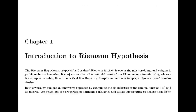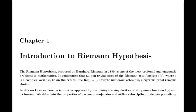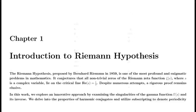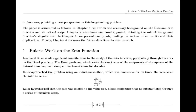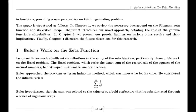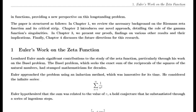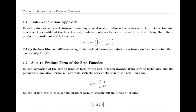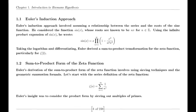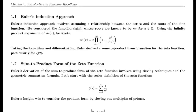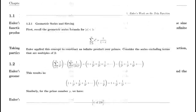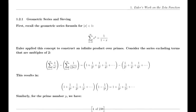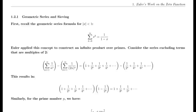Reflection Properties. One of Riemann's major discoveries was the reflection formula for the zeta function. This formula demonstrates a symmetry between the values of the zeta function at s and 1−s. Specifically, it shows that ζ(1−s) can be expressed in terms of ζ(s) using factors involving π, the gamma function, and trigonometric functions. This reflection formula is fundamental to the theory of the zeta function and provides deep insights into its structure.